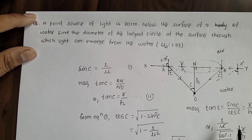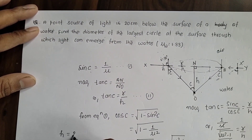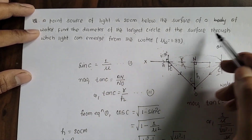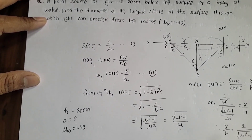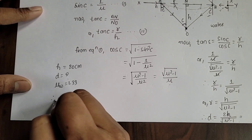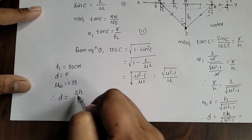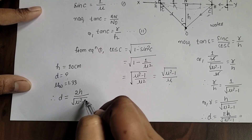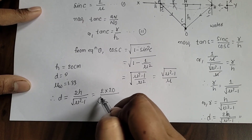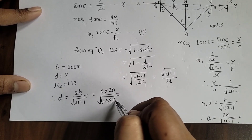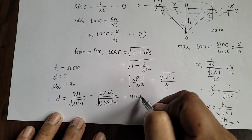Now applying this to the question: h = 20 cm, and the refractive index of water μ = 1.33. Using the formula D = 2h / √(μ² − 1), that is 2 × 20 / √(1.33² − 1). Solving this gives the diameter of the largest circle as 45.62 cm.